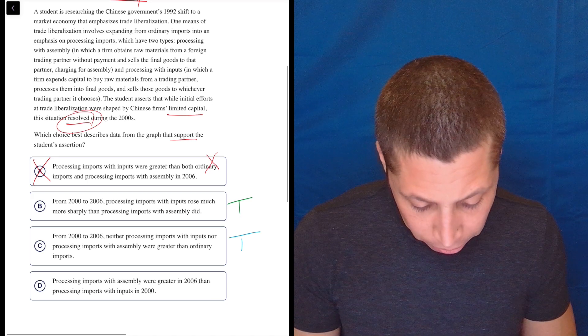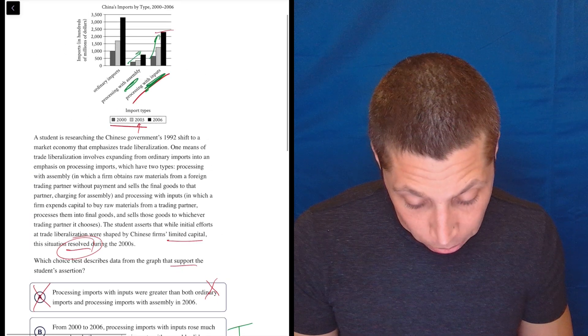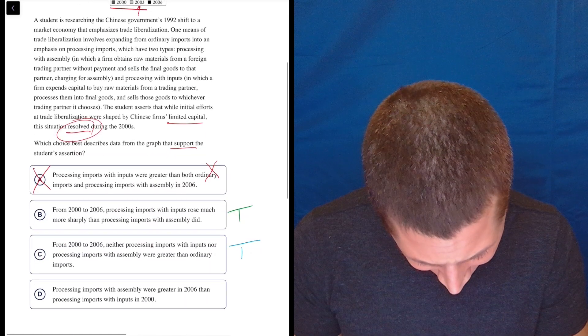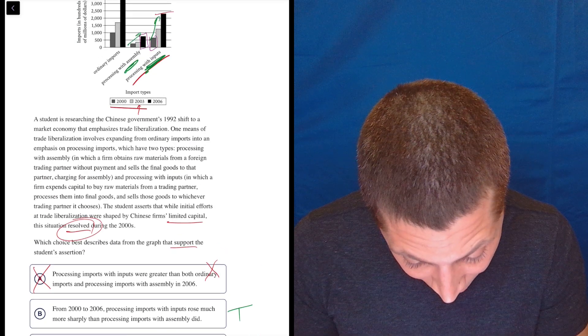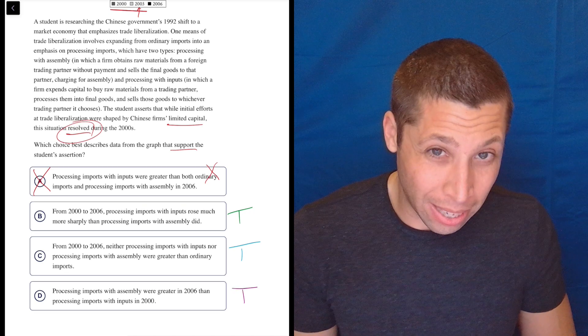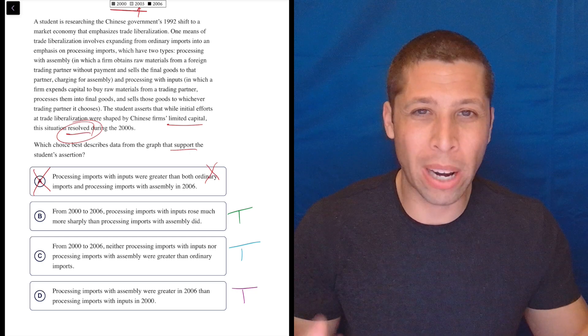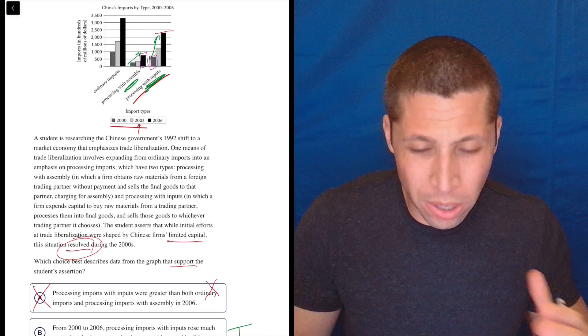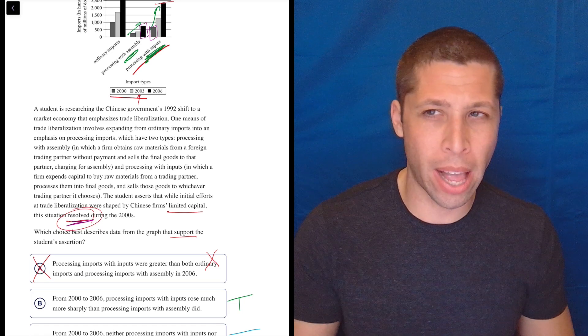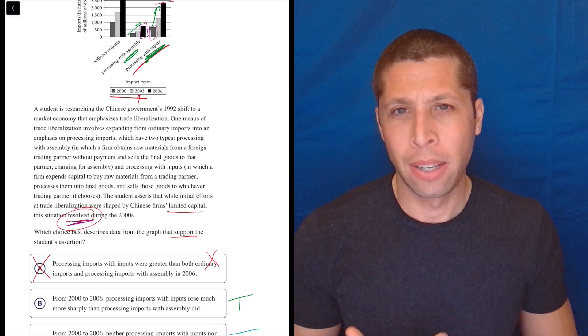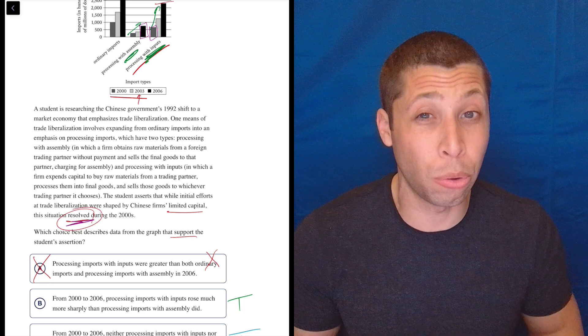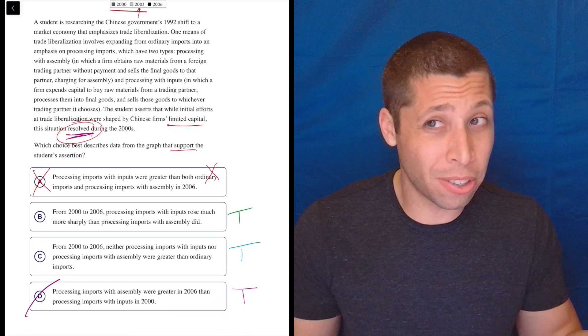D, processing imports with assembly were greater in 2006 than processing imports with inputs in 2000. So we're comparing this box and this box. So yes, that is true as well. But now I can start to think about the meaning of this, like who cares, right? That just seems random, that you're just picking two random things. Wouldn't I want to kind of see a change over time? Again, that word 'resolved' is doing a lot of work for me. If something's resolving, I really want to think about a trend, something changing over time, maybe increasing over time. So if this is just randomly comparing two types of things at two completely different times, I don't get how that is showing some sort of resolution to a problem. So I would get rid of that one just because it just seems random.